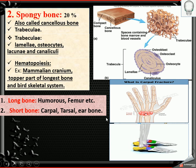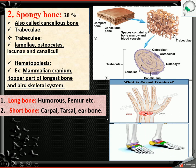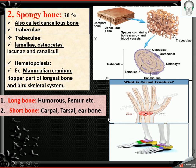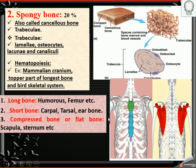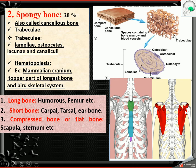The ear bones are called malleus, incus, and stapes. Then compressed bone or flat bone — examples include the scapula and sternum.